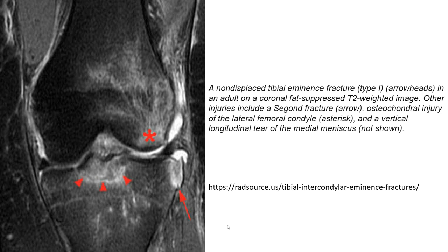This is an example of a non-displaced tibial eminence fracture, Meyers Type 1, shown in an adult on a coronal fat-suppressed T2-weighted image. The arrowhead indicates the fracture. Other injuries include a Segond fracture, an arrow indicating osteochondral injury of the lateral femoral condyle, and an asterisk indicating a vertical longitudinal tear of the medial meniscus.